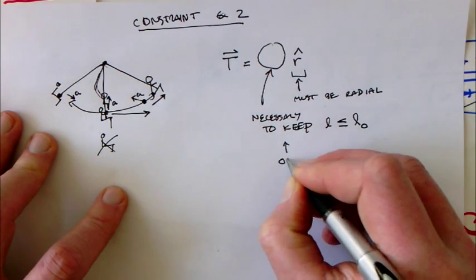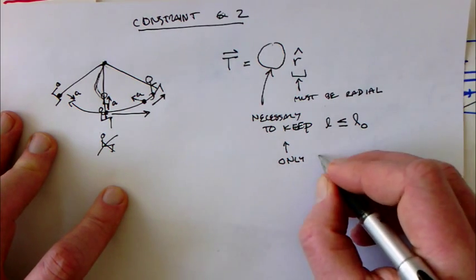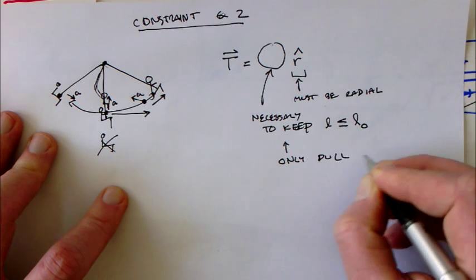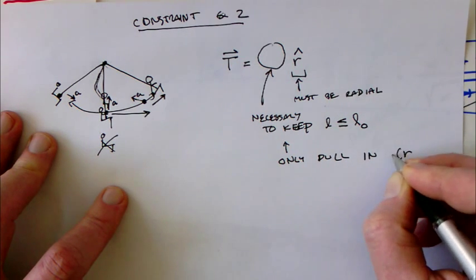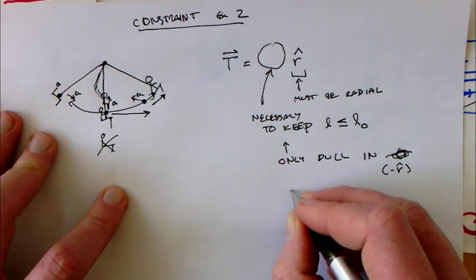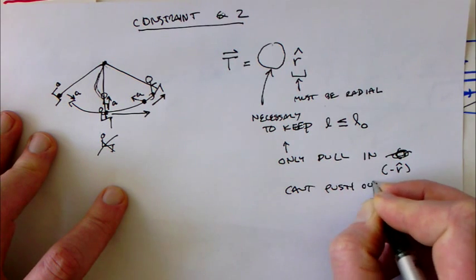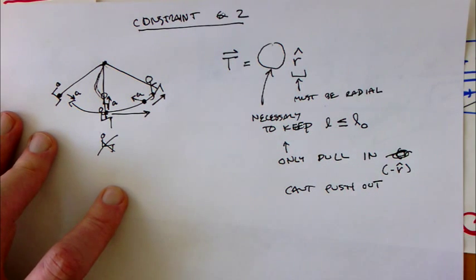So there are two things: it's whatever is necessary to keep L at that value, and it can only pull in. That is, it's got to be in the minus r-hat direction, can't push out. Which is to say, you can't push on a string.